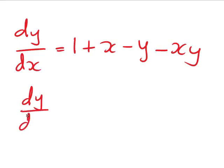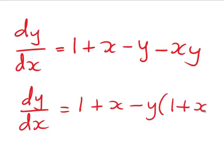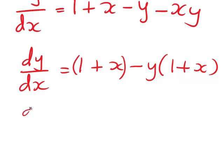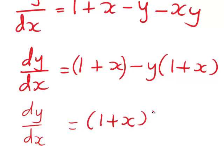In a case like this, it's worth starting by seeing if we can factorize the right-hand side. You'll notice that if we take negative y out as a common factor from the last two terms, it becomes negative y times (1 plus x). Since we also have a (1 plus x) here, we can factorize the right-hand side as (1 plus x) multiplied by (1 minus y).